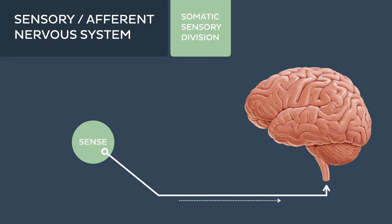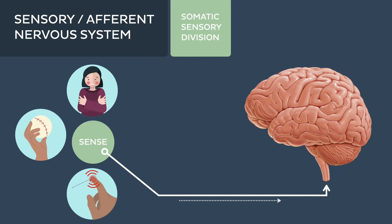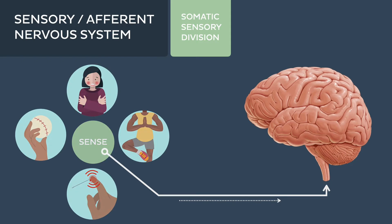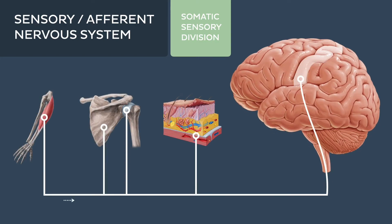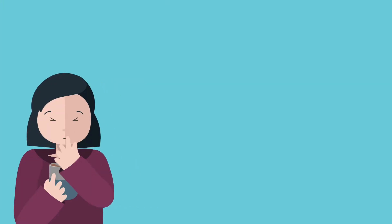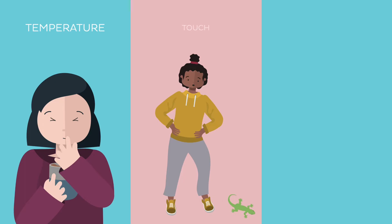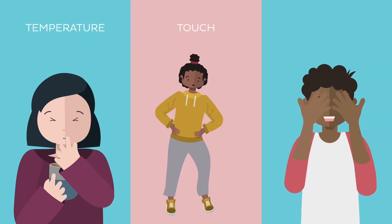The somatic sensory division consists of neurons that carry signals generally associated with the sense of touch, temperature, pain, and body position from various parts of the body, such as muscles, bones, skin, and joints — carrying signals like "ouch, that coffee is really hot," "something just slithered over my foot," or knowing your hands are in front of your face even when your eyes are closed.